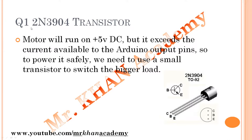The transistor we are using is the Q1 2N3904. The motor will run on 5 volts DC, but it exceeds the current available on Arduino output pins. So to power it safely we need to use a small transistor as a switch for the bigger load. This transistor has three layers: by referring to its surface, the first pin is the collector, the center is the base, and the last is the emitter. Based on that we need to make the connections.